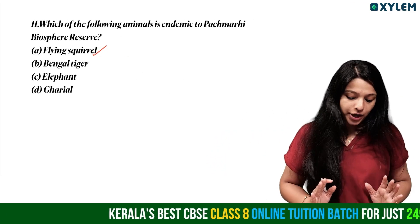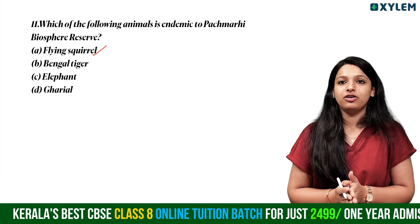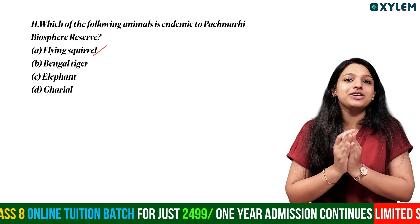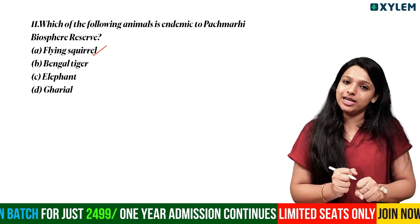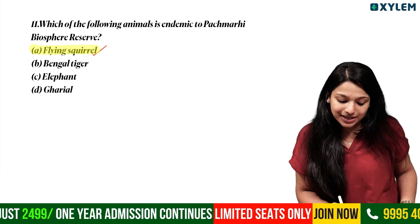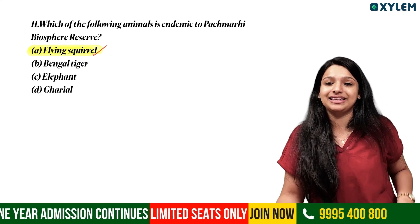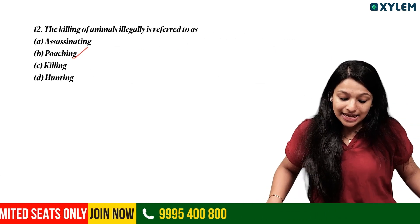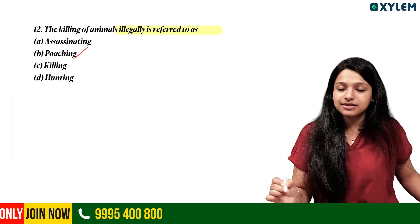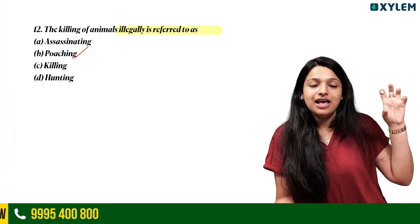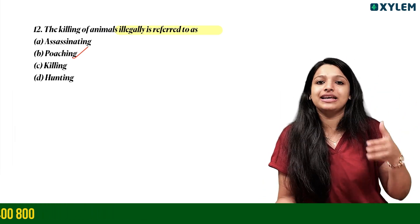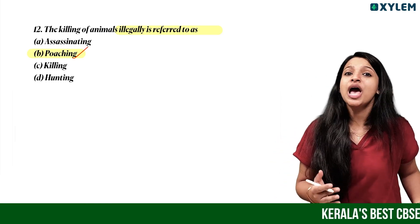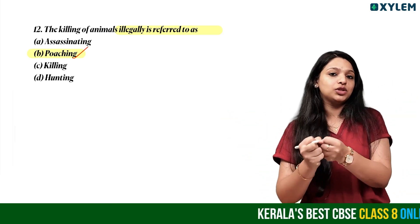Which of the following animals is endemic to the Pachmarhi biosphere reserve? The endemic species of the Pachmarhi biosphere reserve is the flying squirrel. Last question: killing of animals illegally is referred to as poaching — poaching is illegal.